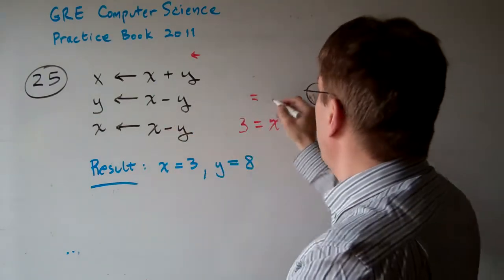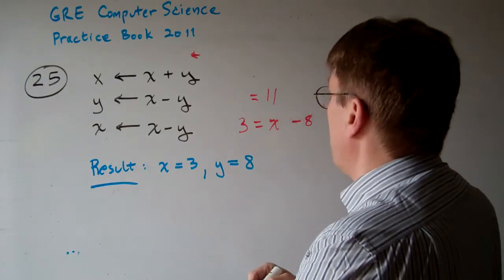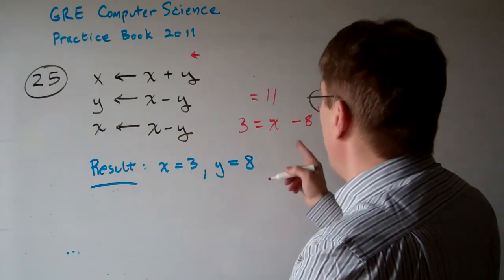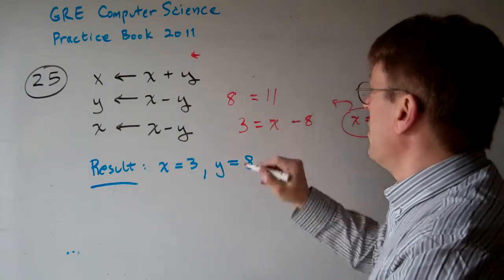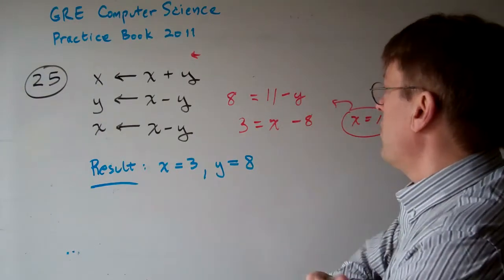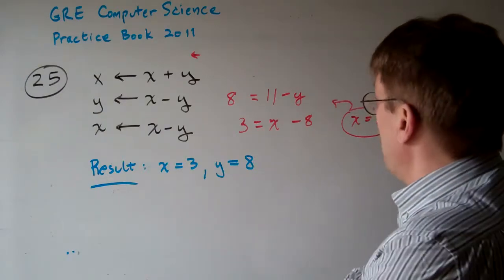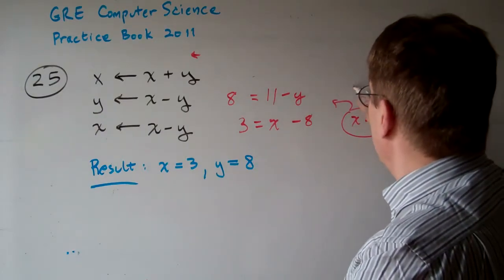So now let's do this step here. We know the x is 11 and we know that the y, when it comes down here, is 8. So it's going to be 11 minus some earlier version of y. Well, in that case, y would have to equal 3.